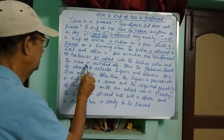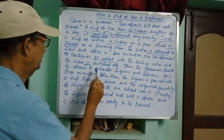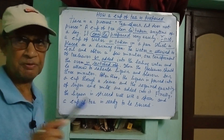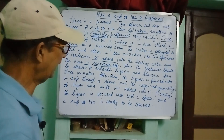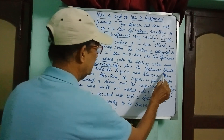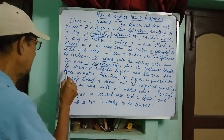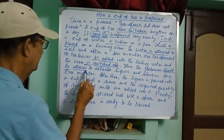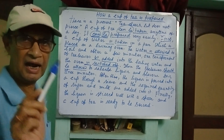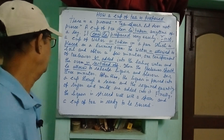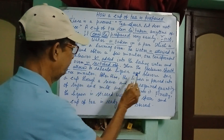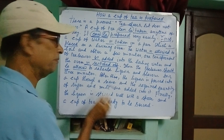'Switched off' uses the be-verb and 'switched' is the past participle form of 'switch.' The oven is switched off. Then, the tea leaves should be allowed — 'should' is modal and 'allowed' is the past participle form of 'allow' — to release liquor and flavor for three minutes.